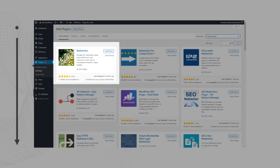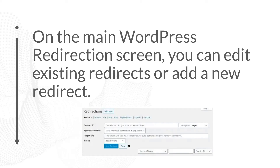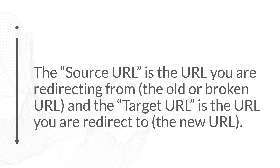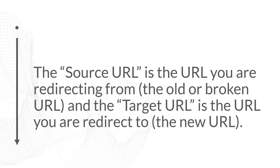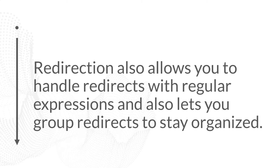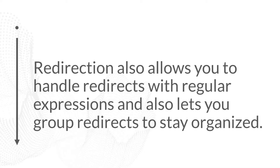Now that we've talked through the code methods, let's talk through a slightly easier way of implementing redirects with a redirect plugin in WordPress called Redirection. On the main WordPress Redirection screen, you can edit existing redirects or add a new one. The source URL is the old or broken URL you're redirecting from, and the target URL is what you're redirecting to. This plugin also allows you to handle redirects with regular expressions, so you can say everything in one directory should redirect to another directory. Redirection also lets you group redirects to stay organized.